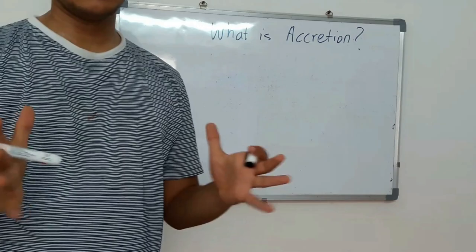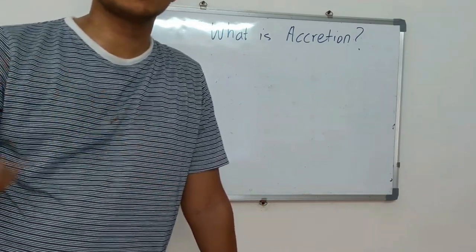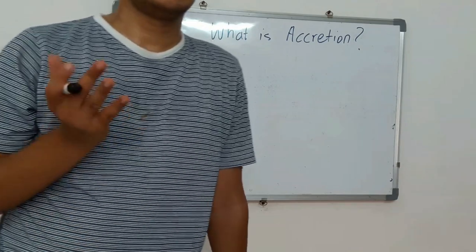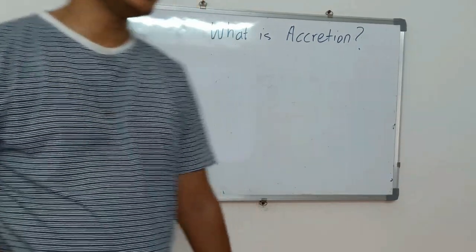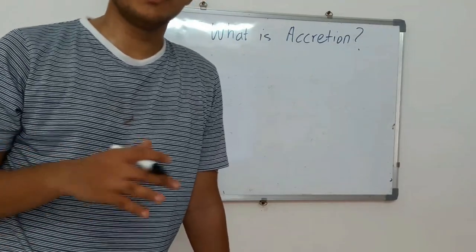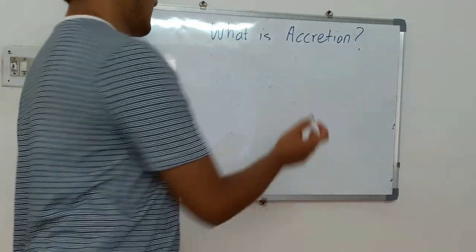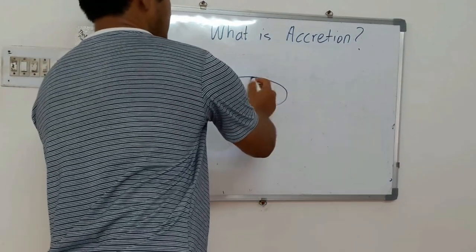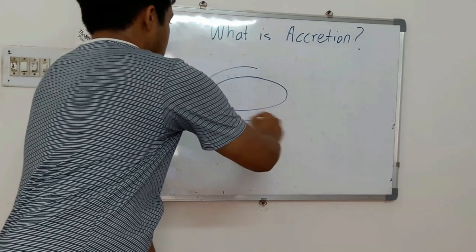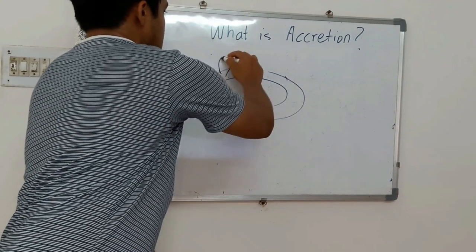But accretion is one whole branch of astrophysics that many people study. Basically, what you must have heard through pop news and mass media is that when you have a black hole or rotating black hole, the mass surrounding it gives it its glow.